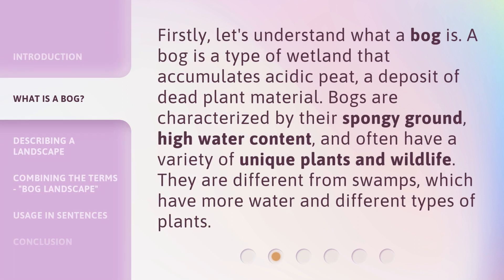Firstly, let's understand what a bog is. A bog is a type of wetland that accumulates acidic peat, a deposit of dead plant material.